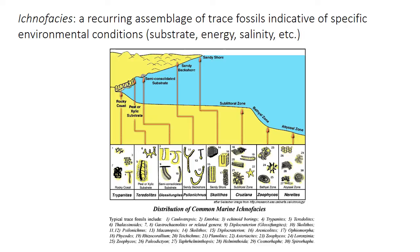We've dealt with facies a lot in this class. A lithofacies is a unit of rock with a characteristic combination of lithology, grain size, sedimentary structures, and so forth. By analogy, an ichnofacies is a recurring assemblage of trace fossils. Certain trace fossils tend to occur together in specific environments, and so an ichnofacies can be indicative of specific environmental conditions in terms of substrate or energy.